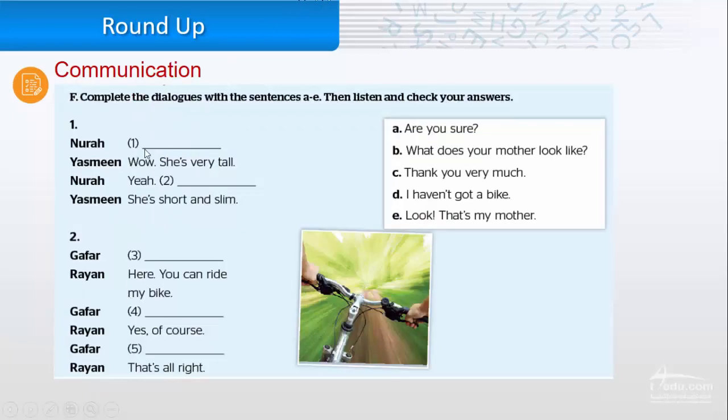Now, here we have two conversations. We'll complete them with the sentences A to E. One. Look, that's my mother. Wow, she's very tall. Yeah. What does your mother look like? She's short and slim.